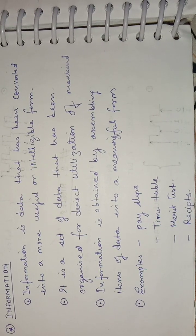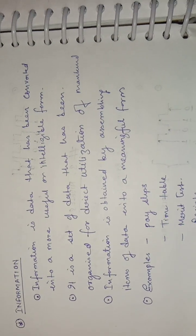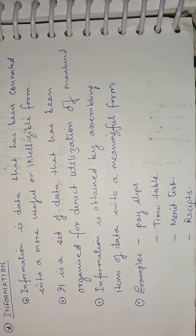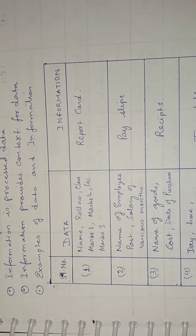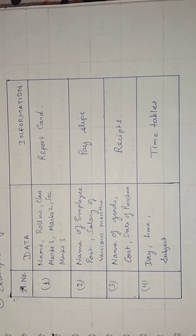You have actually organized and assembled data into a meaningful form — that is information. Examples of information include pay slips, timetables, merit lists, and receipts. Now, coming to the comparison of data and information: data are simple facts, figures, and bits of information but not information itself, whereas information is processed data. Information provides context for data. The following examples will give you a very clear idea of what is data and what is information.